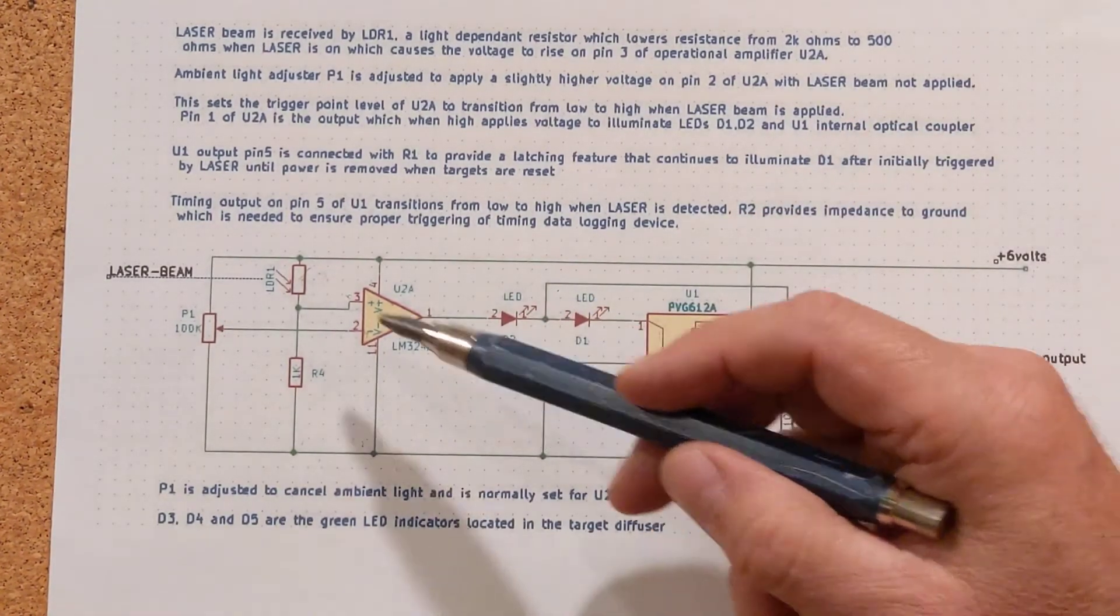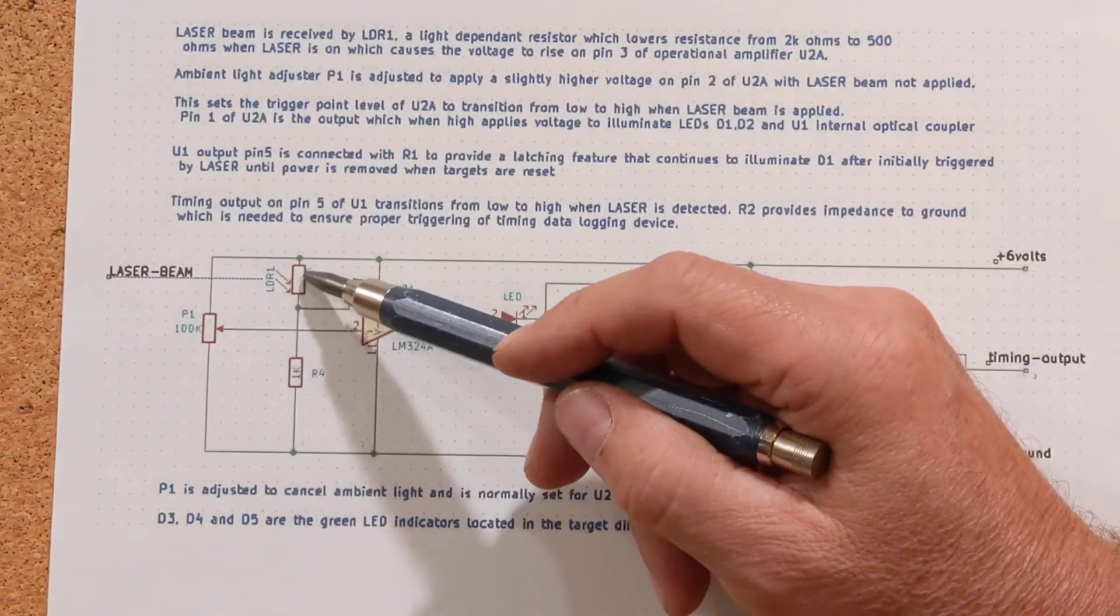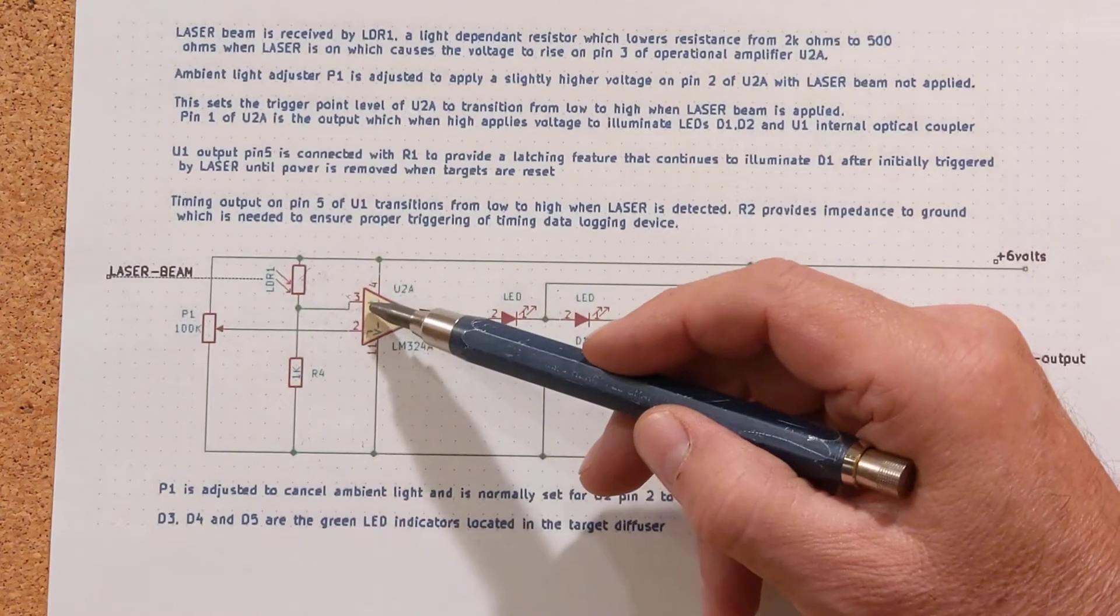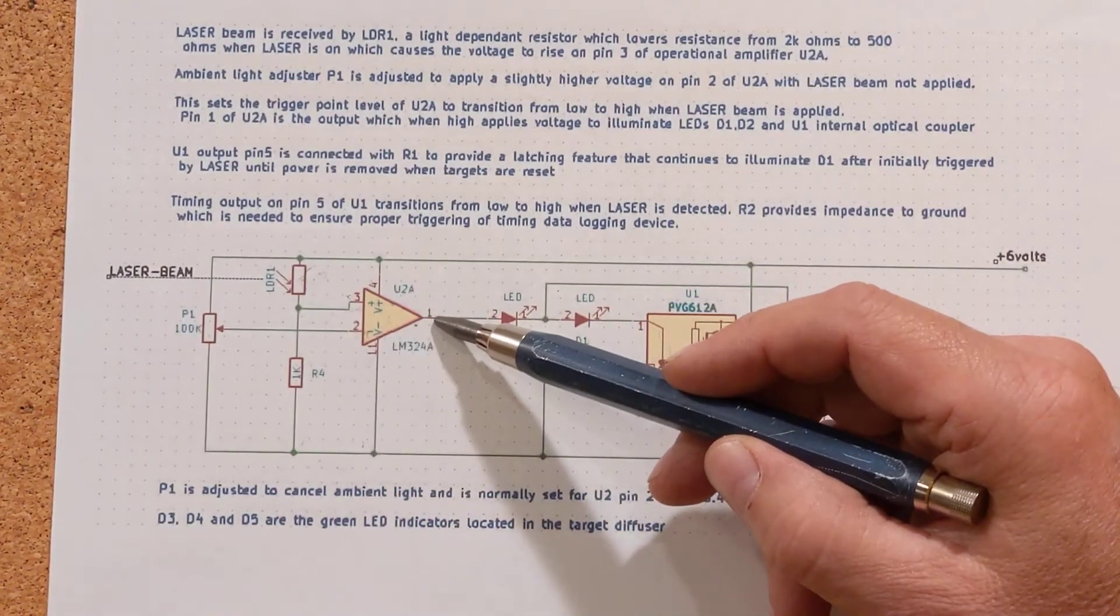When the laser comes in and changes this resistance, makes this pin 3 go higher than pin 2, this output goes high.